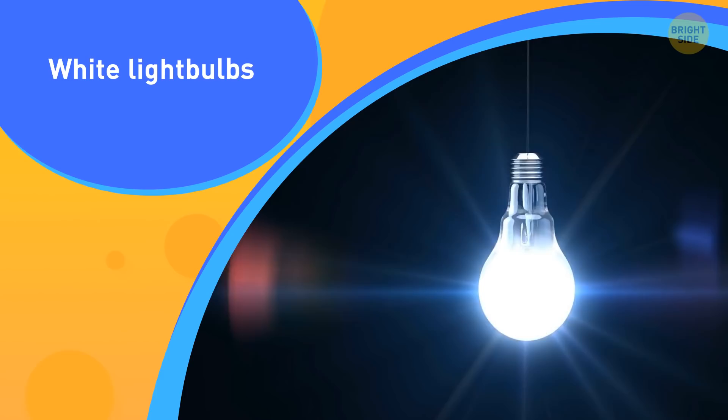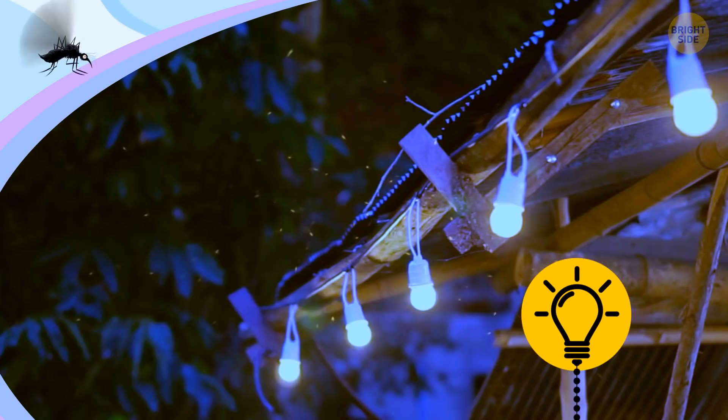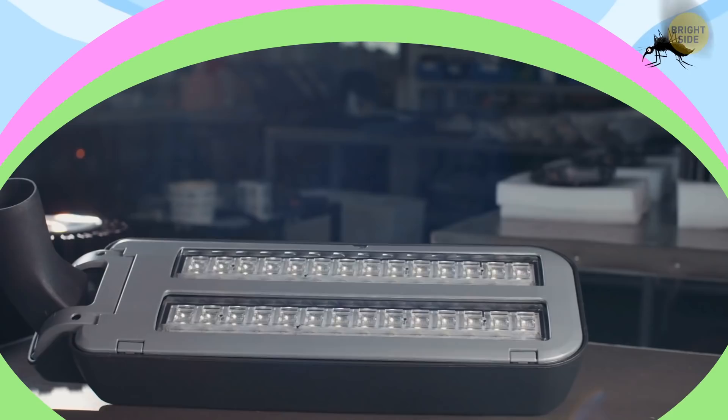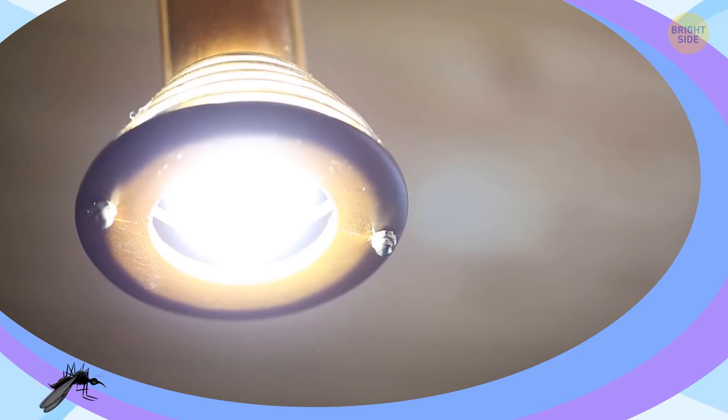White light bulbs. Bright white and bluish light is the most attractive to insects. Yellow, pink, and orange tone lights, not quite so much. Most LED bulbs are a good choice because the white light they produce isn't actually white, but a mixture of different colors. There are exceptions, though, and some LED lights do attract bugs just as much as incandescent ones. So it's better to replace them with bulbs that put out warmer colors.